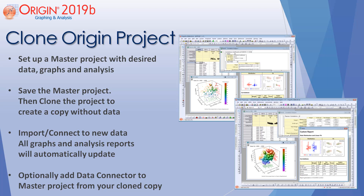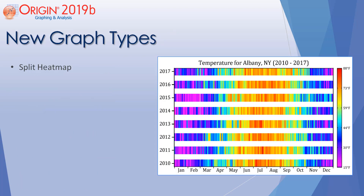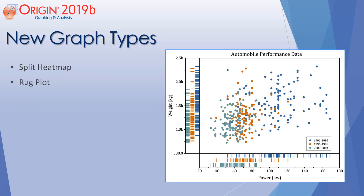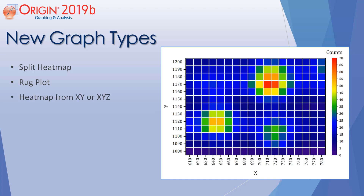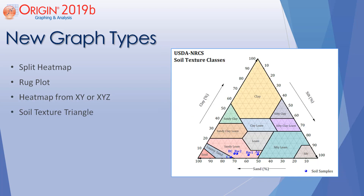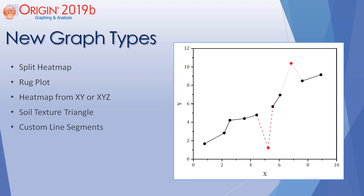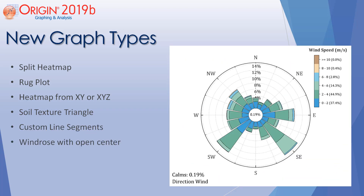You can also add a data connector to a master project from your cloned copy. Several new graph types have been added in this latest version: Split heat map, Rug plot, Heat map from XY or XYZ, Soil texture triangle, Custom line segments, and Windrose with open center.